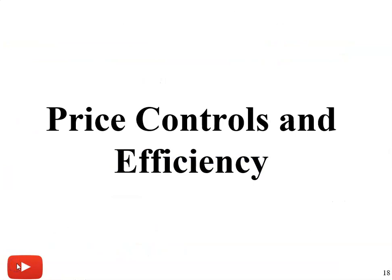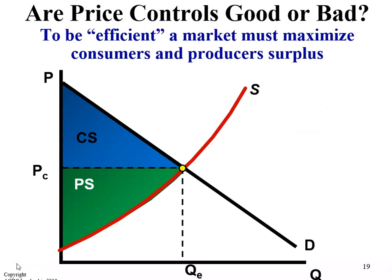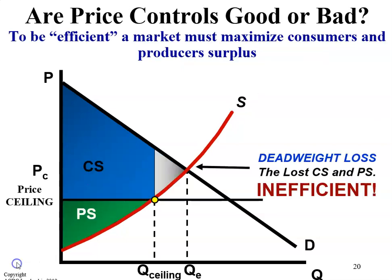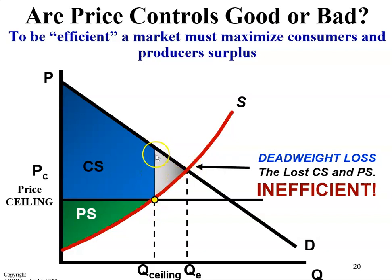Price controls and efficiency: are price controls good or bad? To be efficient, a market must maximize consumer and producer surplus. On this graph, you can see the price ceiling. What ends up happening is the quantity demanded is greater than the quantity supplied, so only a lesser amount is going to be supplied. When you compare that to the equilibrium — where you'd maximize surplus — this triangle here represents deadweight loss.